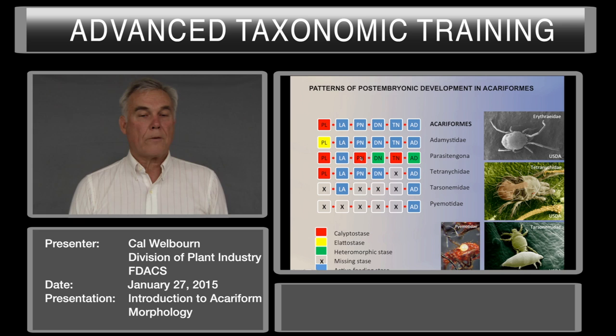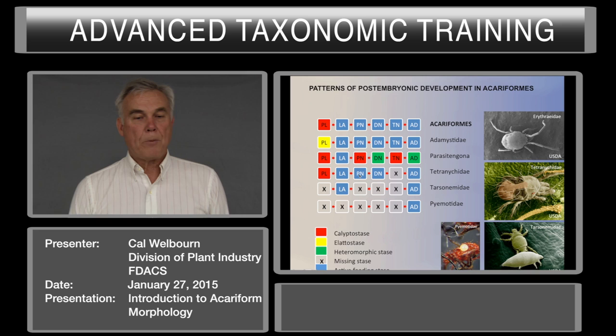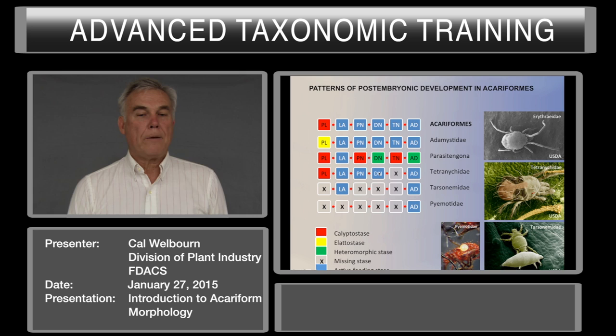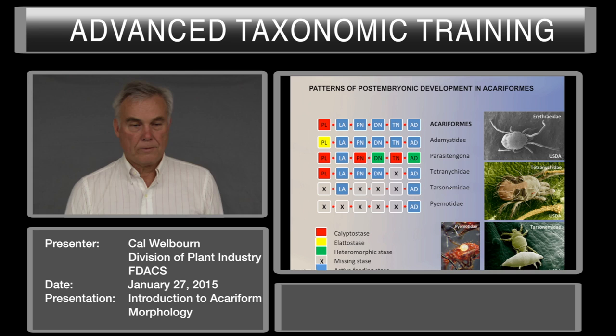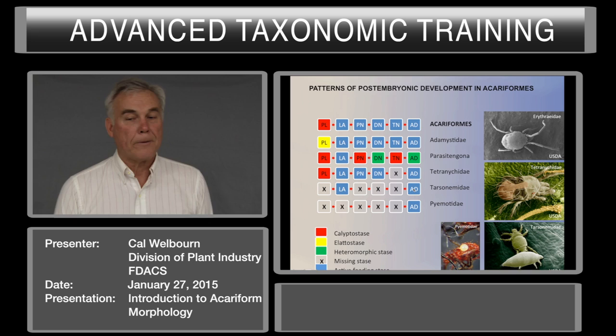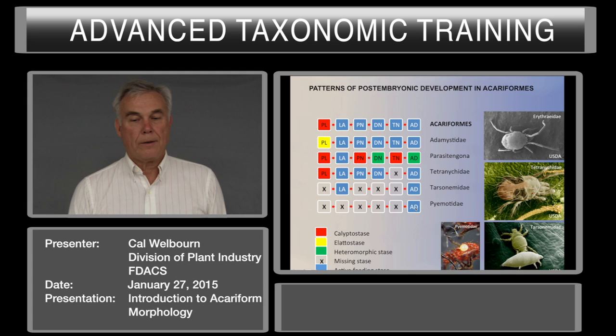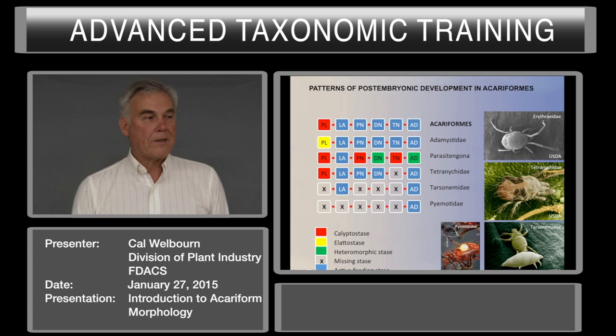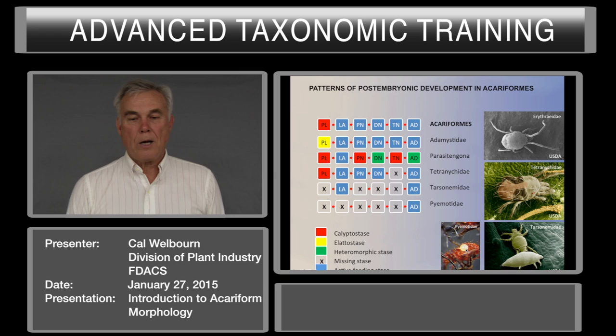For the Tetranychidae, which is the group most familiar to us, they have a very reduced pre-larva, a normal larva with three pairs of legs, a protonymph, deutonymph, and adult—with a few exceptions like Tuccarella. Tarsonemids have only a larva and an adult as active stages. The extreme case in the Prostigmata are the Pyemotidae—obligate insect parasites where females are physogastric, retaining eggs inside the body and developing completely into adults, so the female gives birth to adult mites. The only active stage you will ever find is the adult.